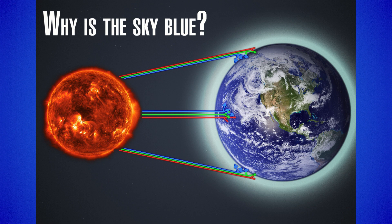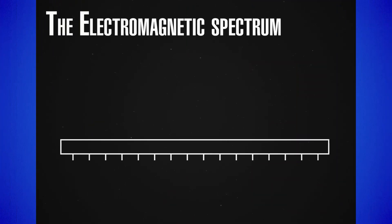Since larger wavelength corresponds to lower frequency, we can see now where the terms red shift and blue shift come from. Let's go back to the whole electromagnetic spectrum and take a look at where the visible light is found. It becomes clear that the visible light is only a small portion of the whole spectrum.